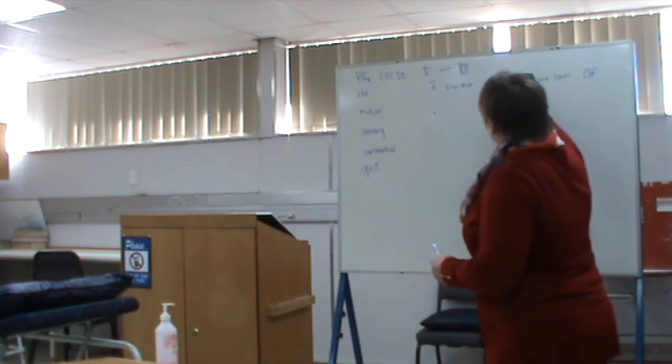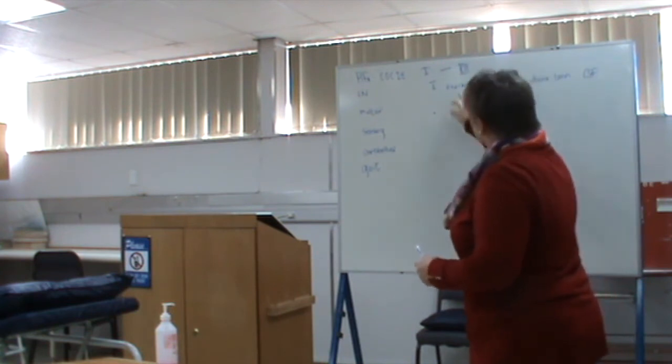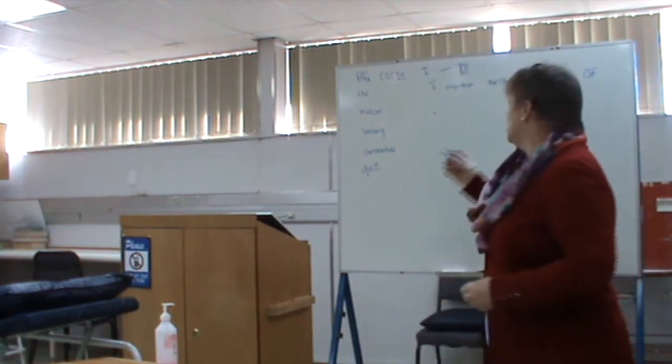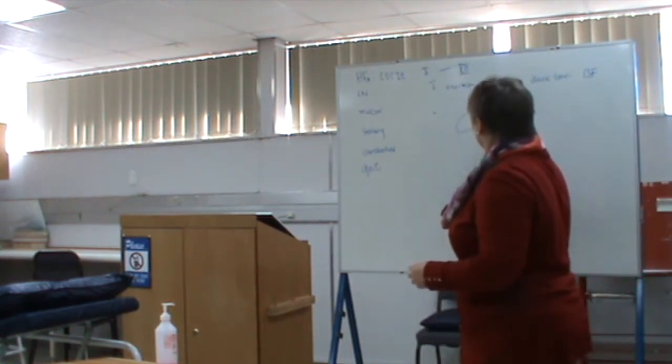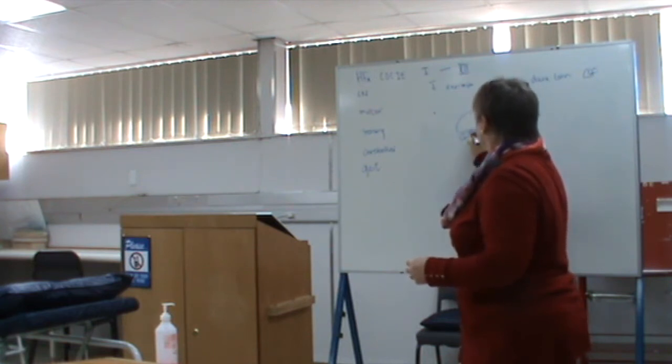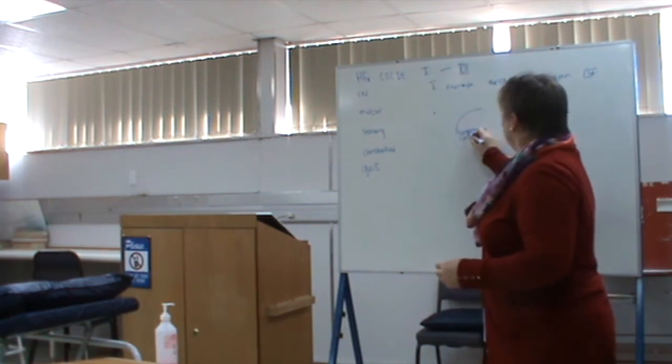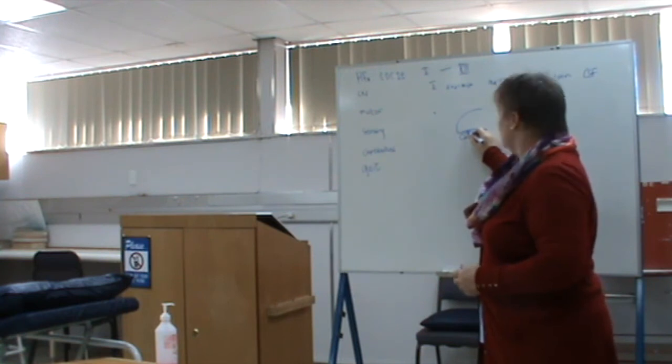So, anterior skull base fracture is one reason for anosmia, neurological reasons for anosmia. The other reason is if you look at your brain, the frontal lobe is there and the eyes are at the bottom here, and you have dura that runs in between there.